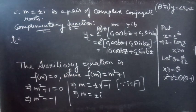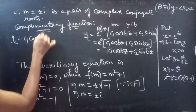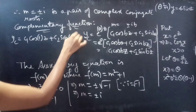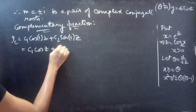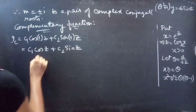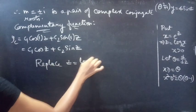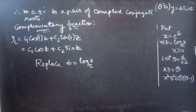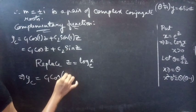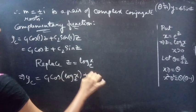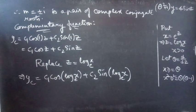For b equals 1, yc equals c1 cos(1·z) plus c2 sin(1·z), which equals c1 cos z plus c2 sin z. Now replacing z with log x to the base e, yc becomes c1 cos(log x) plus c2 sin(log x). These are the required complementary function terms.